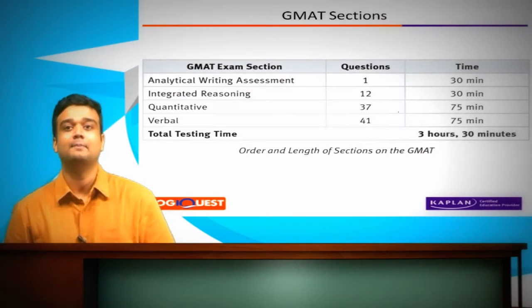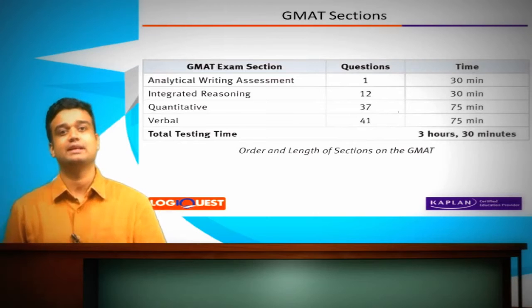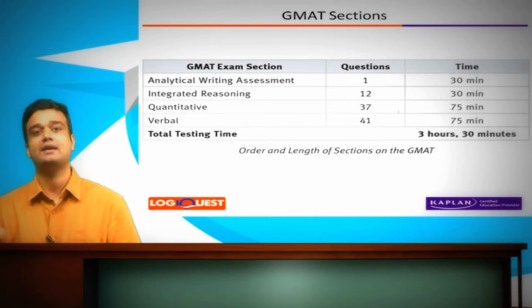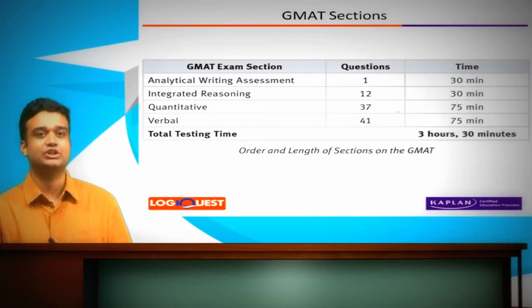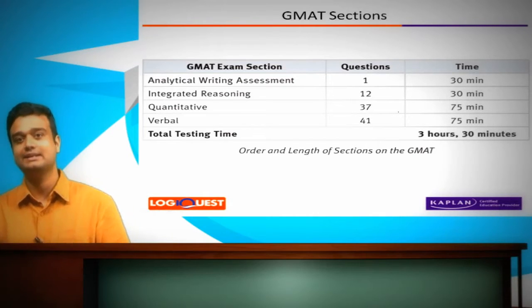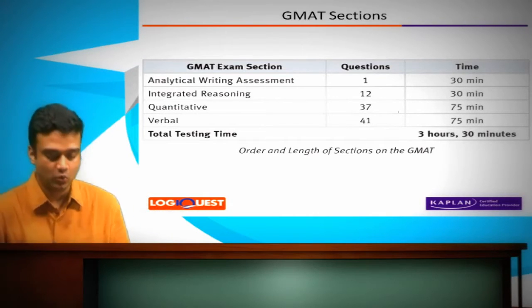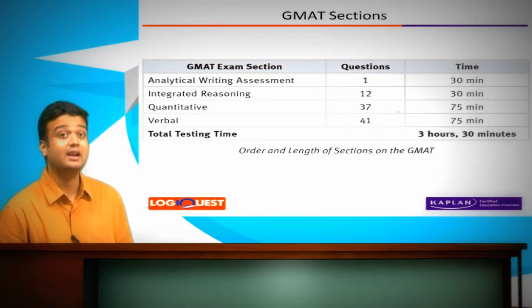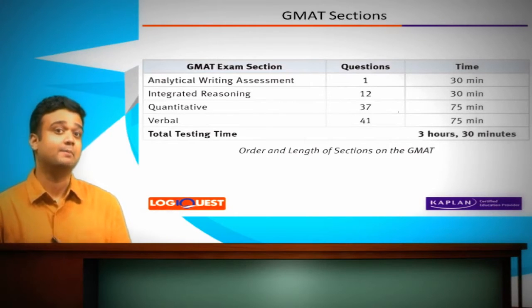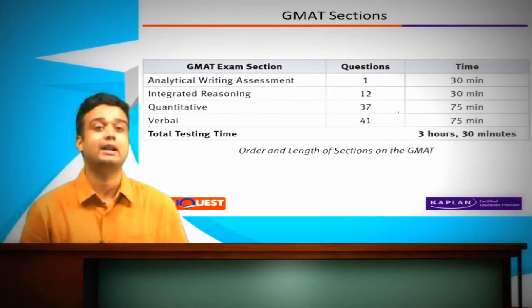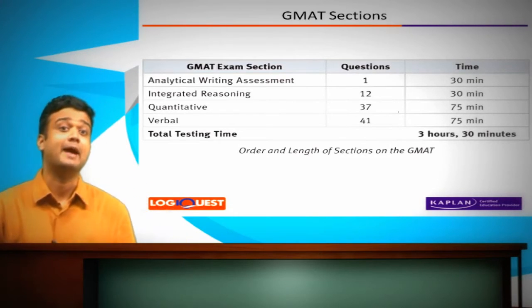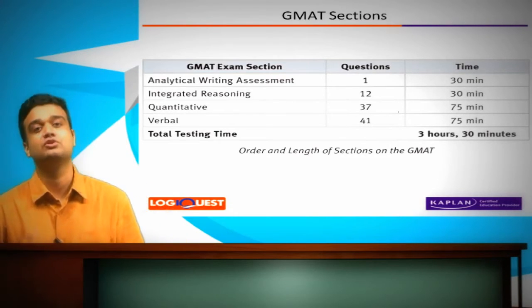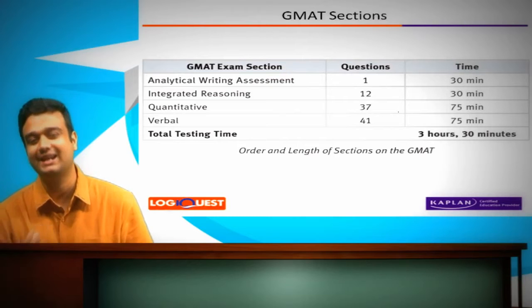What is the structure of the test itself? You have four sections. The first is the analytical writing assessment, where you are given an argument of sorts — a proposal, a plan — and your job is to critique it.